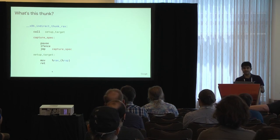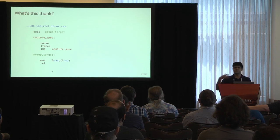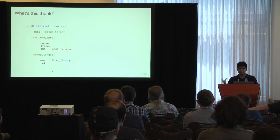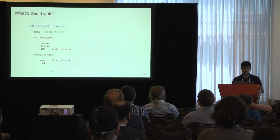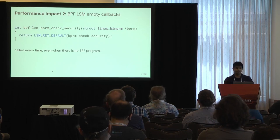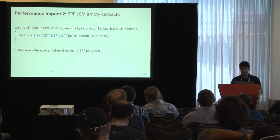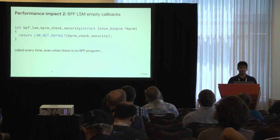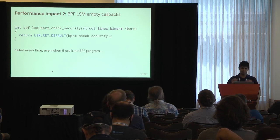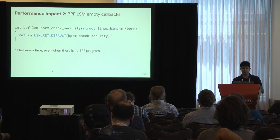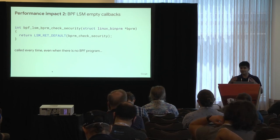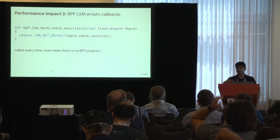Imagine all of this sequence getting added in every place — socket send message and everything. These LSM hook permission checks are done in very hot parts of the kernel, and having these indirect calls in those hot parts is very bad for performance. The other place where there is performance impact is these empty callbacks. BPF LSM, as part of the treaty, added these empty callbacks — functions that return a default value when there is no BPF program attached — and they are called every time on all these hot parts, even when no BPF program is attached.